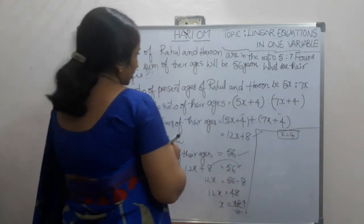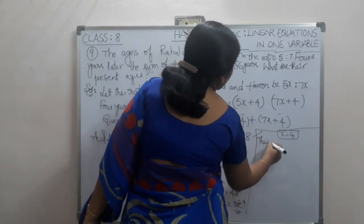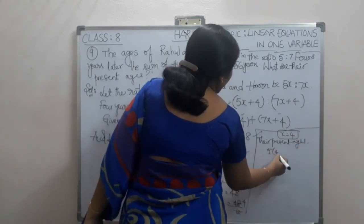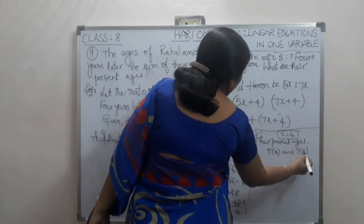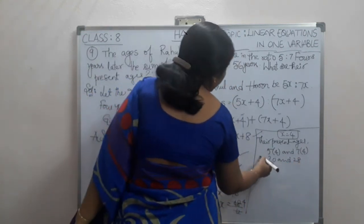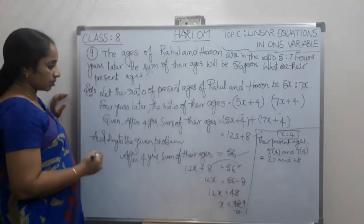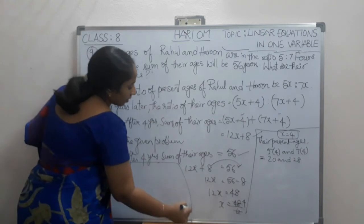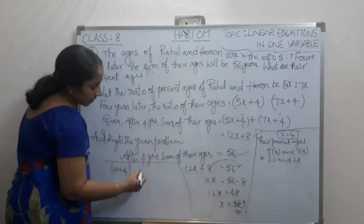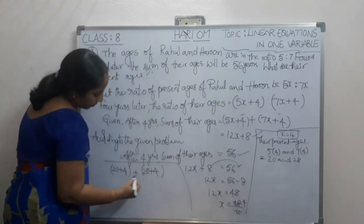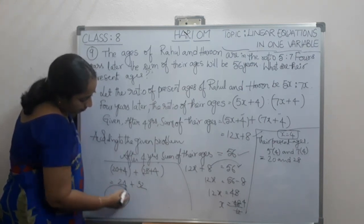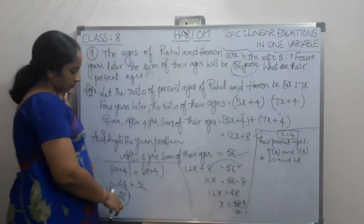Their present ages are: 5 times 4 equals 20, and 7 times 4 equals 28. Verification: after 4 years, their ages are 20 plus 4 equals 24 and 28 plus 4 equals 32. The sum is 24 plus 32 equals 56, which matches what was given.